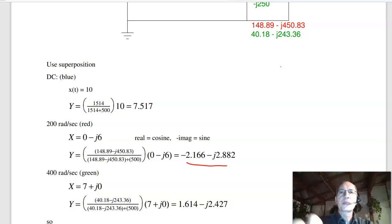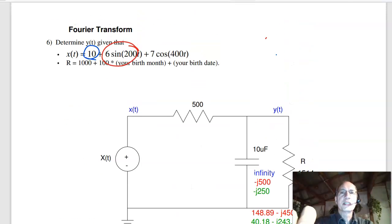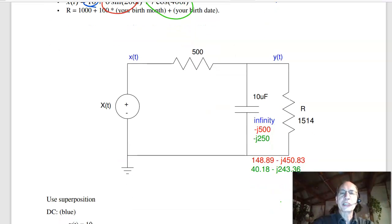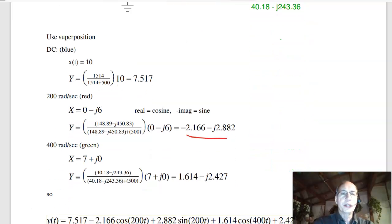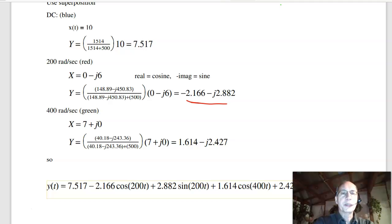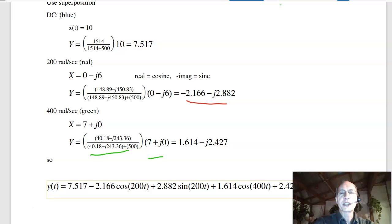The next term, at 400 radians per second. That's this term right here. At 400 radians per second, the capacitor becomes minus j250. R in parallel with C gives you 40 minus j243. Use voltage division. It's what you're measuring, divided by the total times the input. This is 7 cosine, 0 sine. Gives you this term.